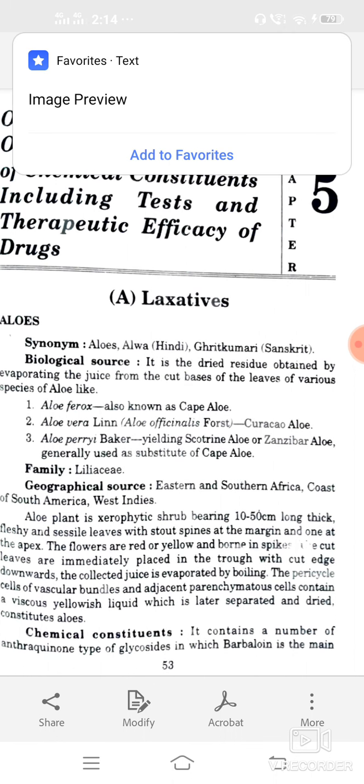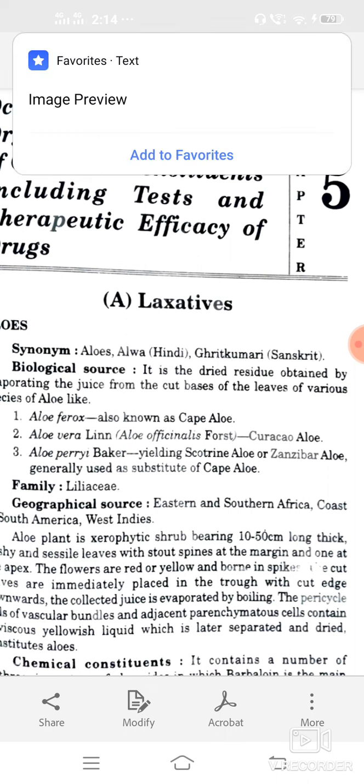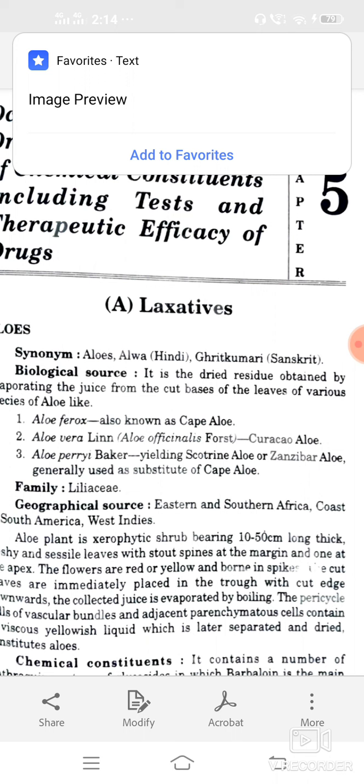Aloe plant is a xerophytic shrub bearing 10 to 50 cm long, thick fleshy, or spiny leaves with spine at the margin or one at the apex. Flowers are red or yellowish in color and the cut leaves are immediately placed in trough with the cut edge downwards. Collector juice is evaporated by boiling.